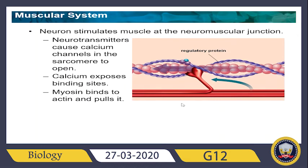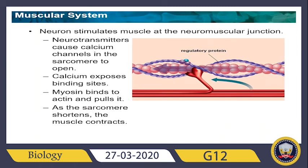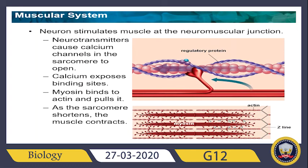At the junction site, there is a regulatory protein that causes the calcium channels to open. Calcium exposes the binding sites, myosin binds to actin and pulls it. As the sarcomere shortens, the muscle contracts — this is how the contraction happens.